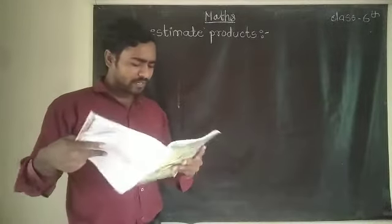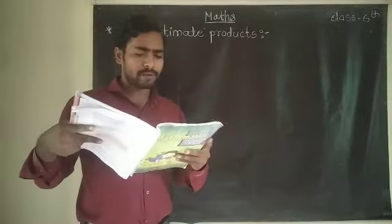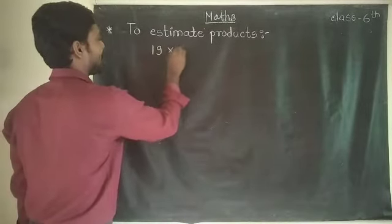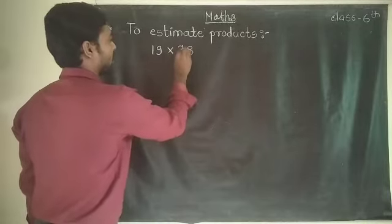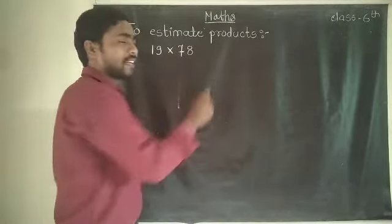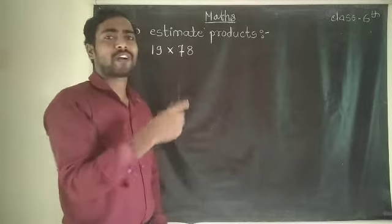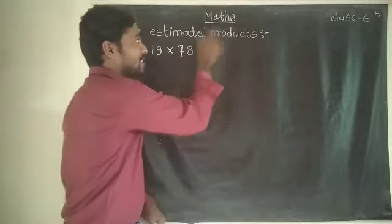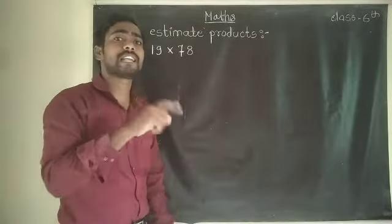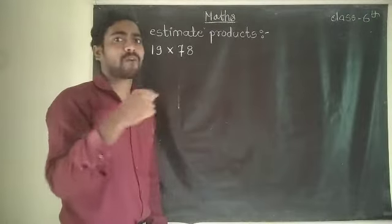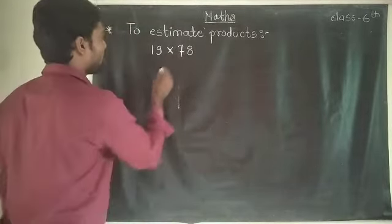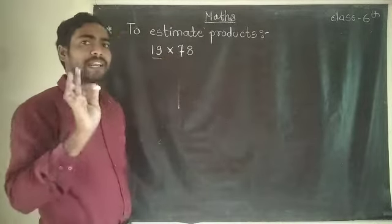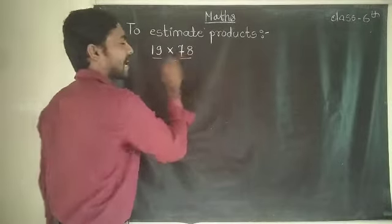The first example given in your book is 19 multiplied by 78. We have to find the estimated or reasonable answer. We don't do this directly as a multiplication. We have to estimate the product — that means we first need to find the rounding of numbers. The first number is 19 and the second number is 78.